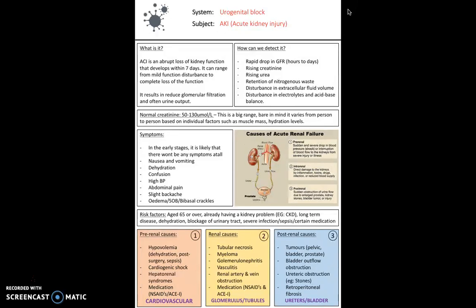In terms of risk factors for acute kidney injury, you'd expect patients over 65 who already have a kidney problem, maybe CKD, a long-term disease, dehydration, blockage of the urinary tract or severe infections. There's quite a lot of causes, which we'd determine as risk factors.